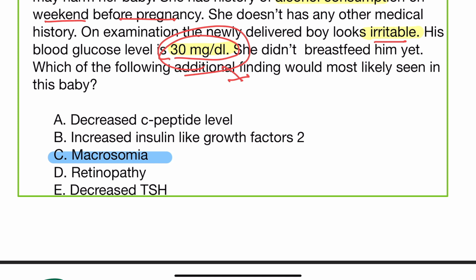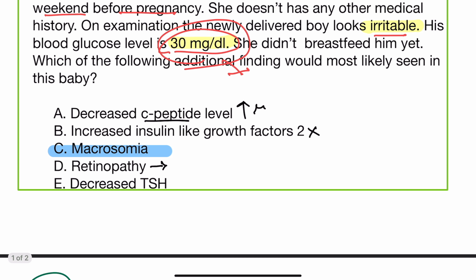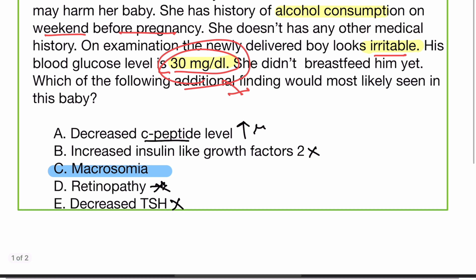Why not the other answers? Decreased C-peptide level is not the case — it will actually be increased. Increased insulin-like growth factor is not the answer. Retinopathy is seen in chronic conditions affecting the retina, but this is a newborn baby so that is not applicable. Decreased thyroid stimulating hormone is also not the case. So the correct answer is macrosomia.